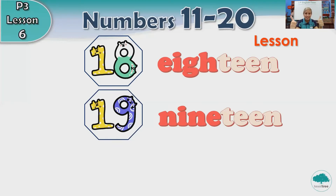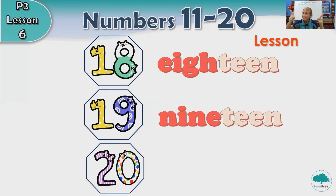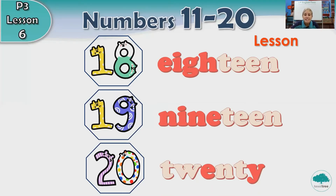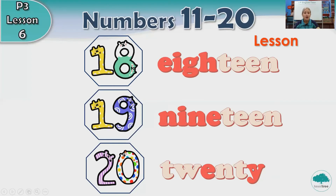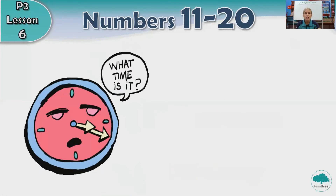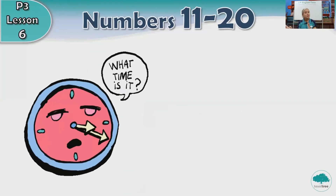Are you with me? Great. So the last one, what comes after 19? It's number 20. Very good. Can you help me spell 20? T-W-E-N-T-Y. Good job, everybody. Now we have learned to spell the numbers 11 to 20.